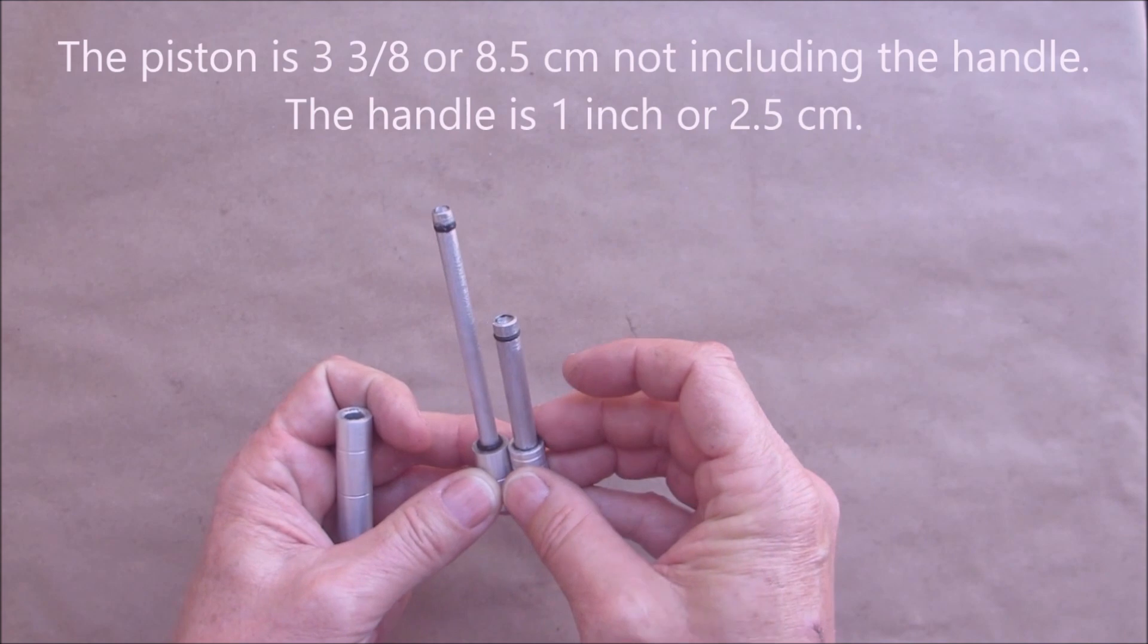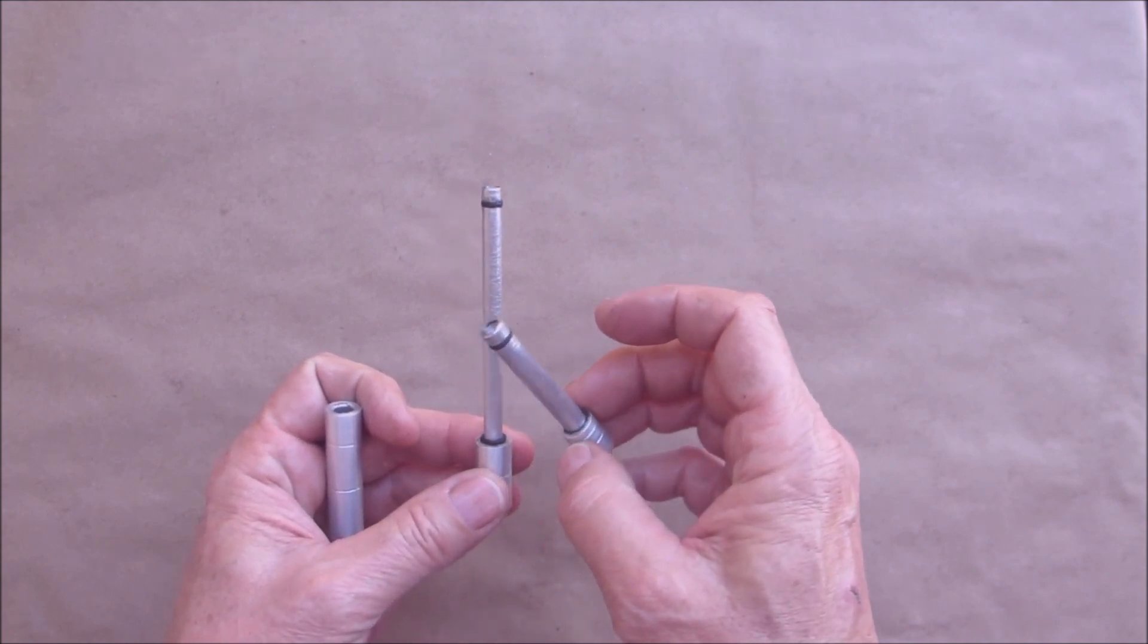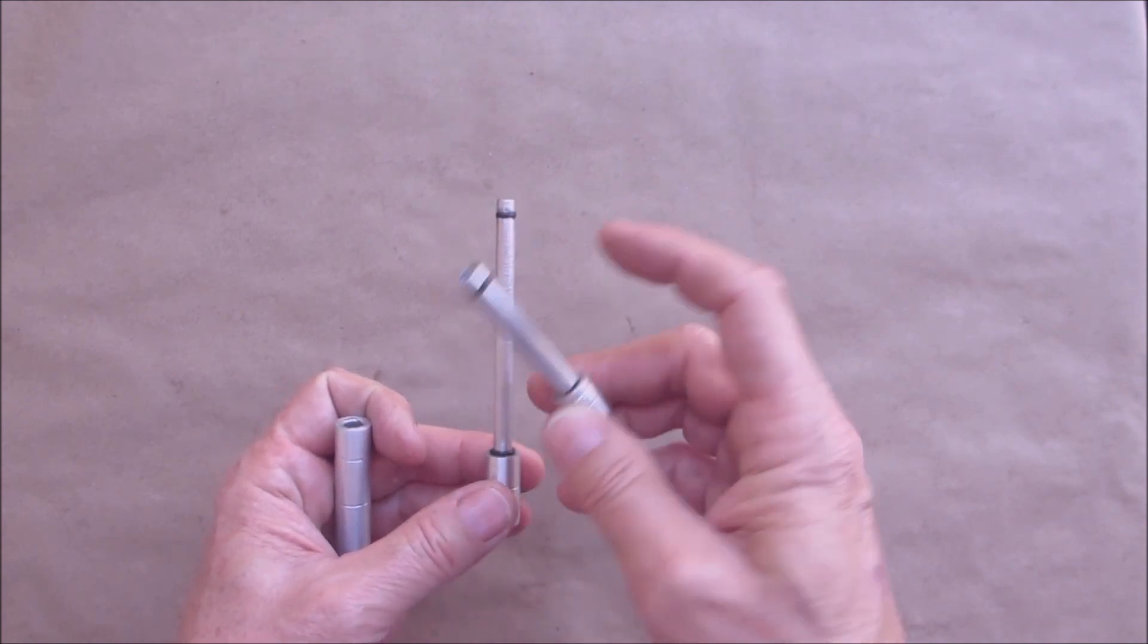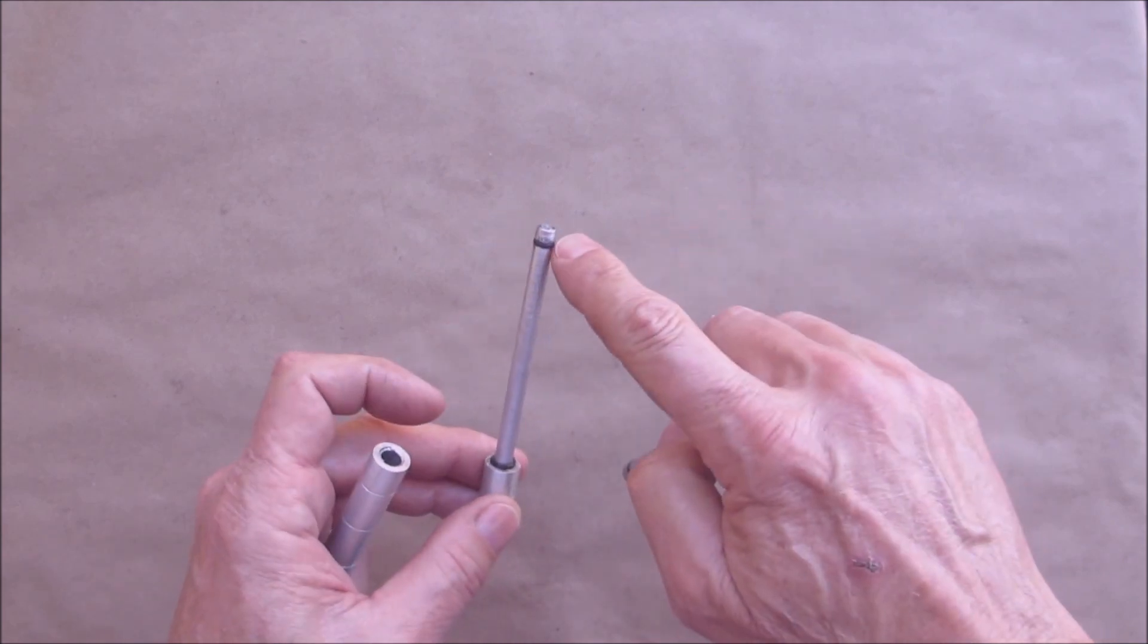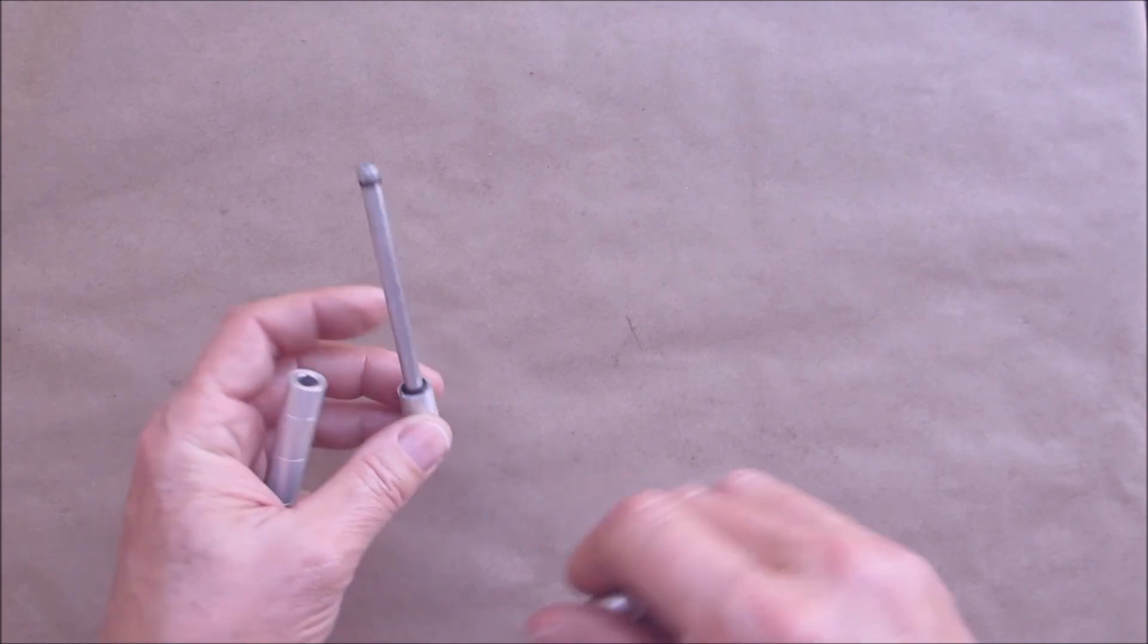Here's our piston, which is considerably longer than this one, about an inch and a half longer I would guess. This is just a quarter inch rod. The same thing was done as this was, with the little groove put in and a hole drilled on the end.